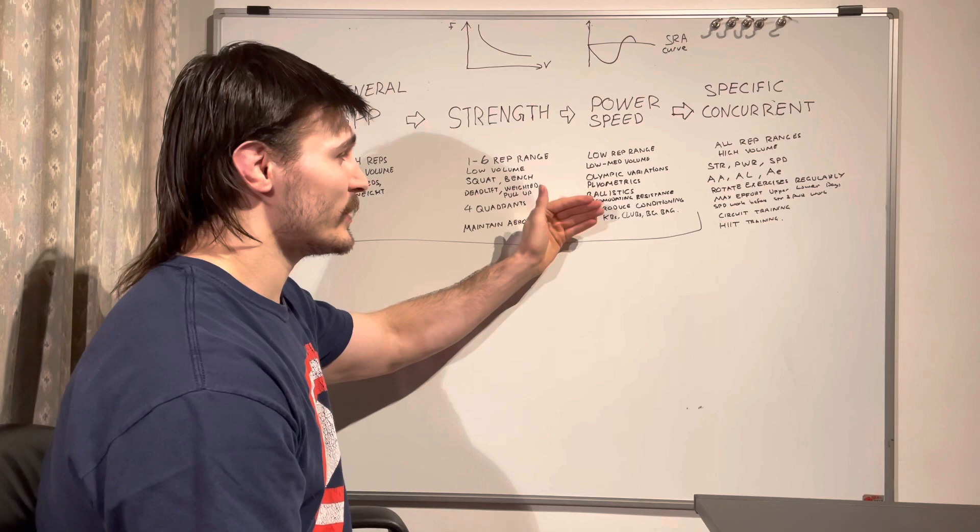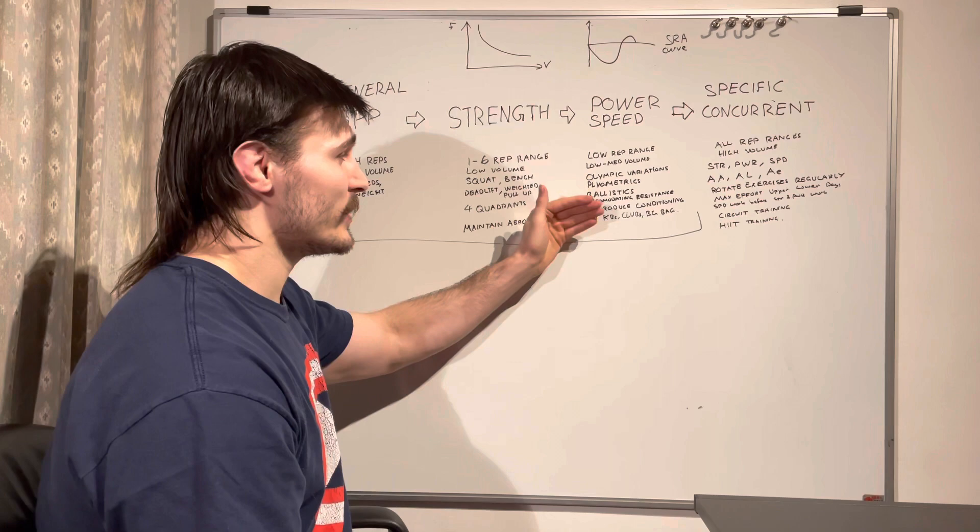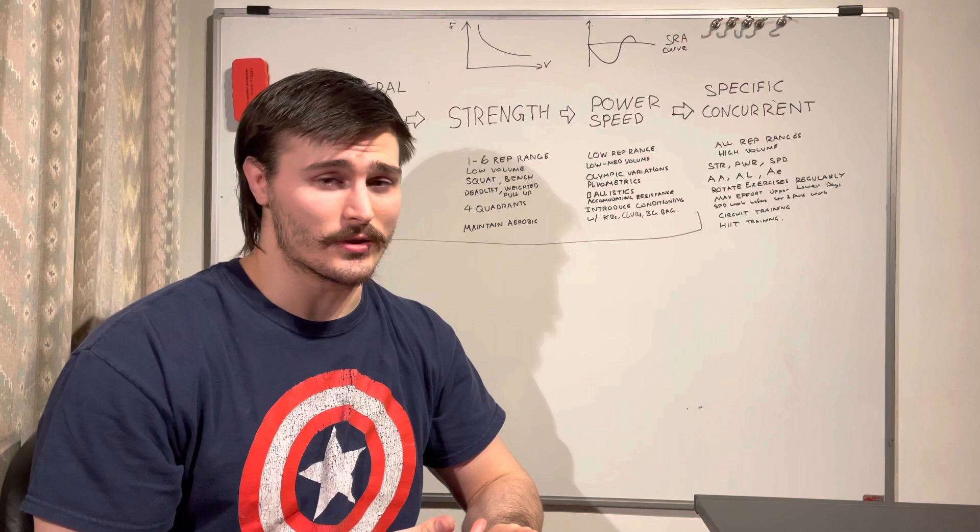Here we're sticking to lower reps. We're increasing the volume a little bit, low to medium volume. We're doing the Olympic lift variations, whether that's cleans, jerks, snatches, push presses are useful, or hang versions of those.